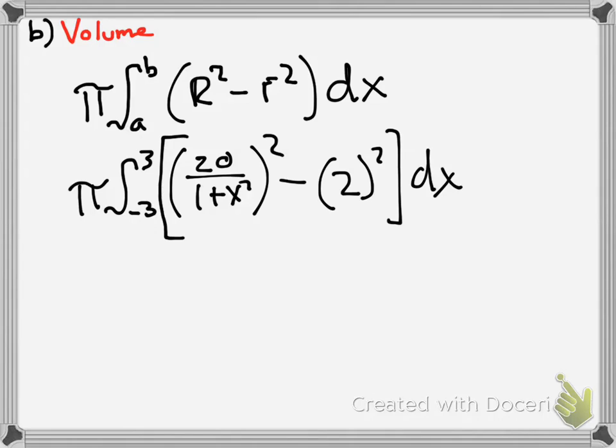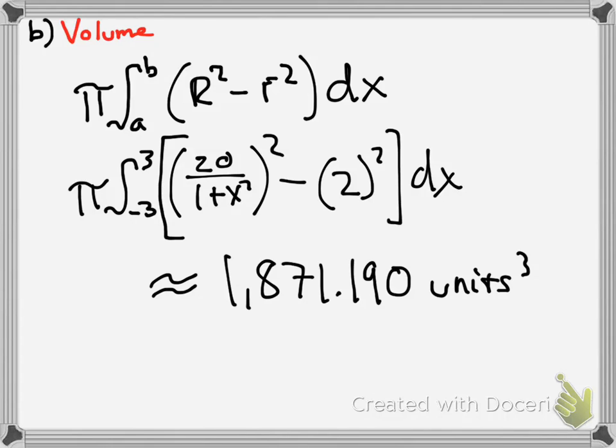So, what we would get is approximately 1,871.190. Usually, you might want to round to three significant figures. It's probably a pretty good idea when you're taking the AP test. And since this is volume, it would be units cubed, but you don't have to worry about that. I just like putting that down so I make a mental note to myself and on the paper of what exactly I'm doing.